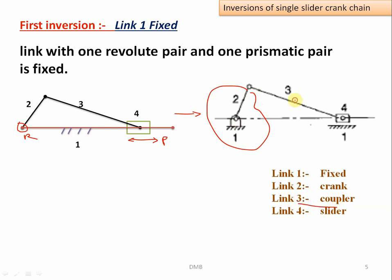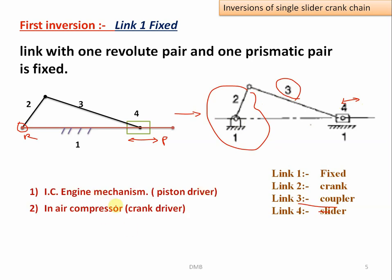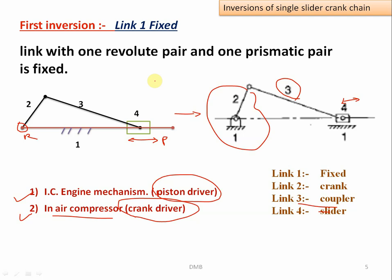Link number three is called the coupler, and link number four acts as the slider — it slides with respect to link number one. The first inversion of the single slider crank chain is used in IC engine mechanisms and in air compressors. In an IC engine, the piston acts as the driver. In air compressors, the crank acts as the driver and the piston acts as the driven link.